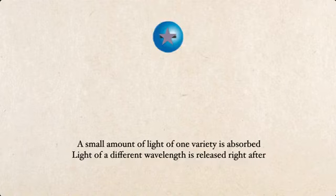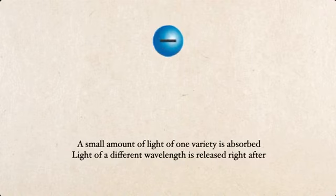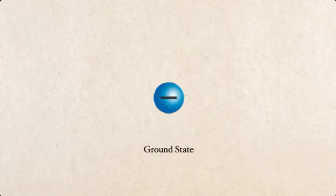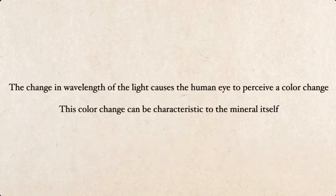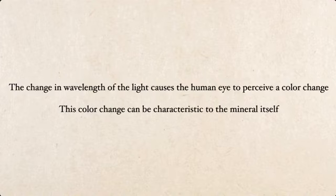Basically, the electron absorbs some of this light and then light of a different wavelength gets released right after. Because it's hard for an electron to remain in an excited state — it can only do it for so long. It pops right up, releases some of that energy, and then naturally goes back down to its ground state. Because of how the human eye views things — the spectrum of visible light — the eye perceives a color change during this.